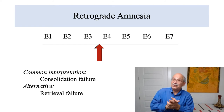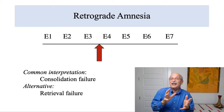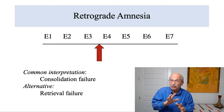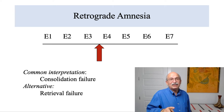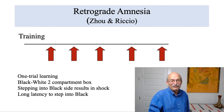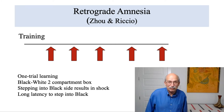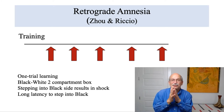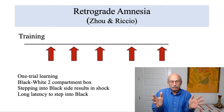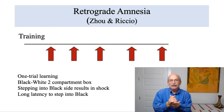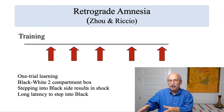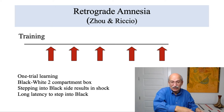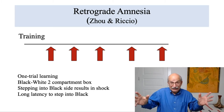But whenever there's an argument about lack of consolidation or any memory failure, you always have to ask yourself: might it be a problem with retrieval, not consolidation? Let's look at an experiment done with rats — we don't give concussions to human subjects experimentally, though we study electroconvulsive amnesia in people like football players who've had concussions. In this experiment, there was a simple avoidance training task. The rat was in a two-compartment box.